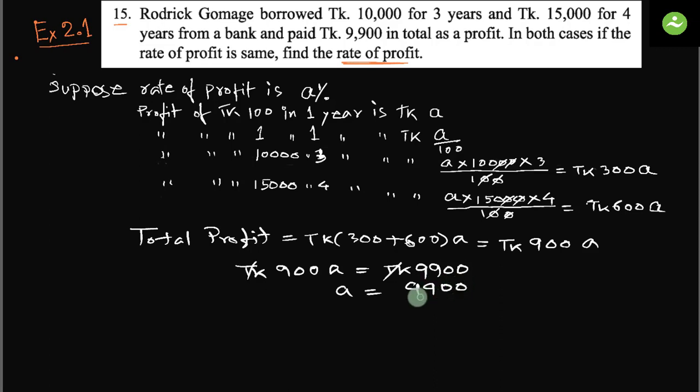9,900 divided by 900. If we simplify, zero is gone, 9,900 divided by 9 is 11. a equals 11. So now we found the rate of profit. The rate of profit is 11 percent, and this is the answer.